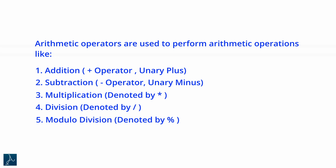These are the different arithmetic operators available in C++. The plus operator, also known as addition or unary plus, is used to perform addition of variables and constants. For example, 4 plus 2 returns value 6.